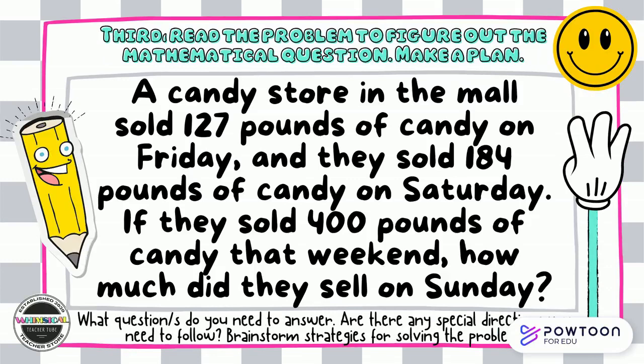Third, read the problem to figure out the mathematical question or questions and make a plan. A candy store in the mall sold 127 pounds of candy on Friday and they sold 184 pounds of candy on Saturday. If they sold 400 pounds of candy that weekend, how much did they sell on Sunday? What question or questions do you need to answer? Are there any special directions you need to follow? Brainstorm strategies for solving the problem. Pause the video and solve this problem with your partner.